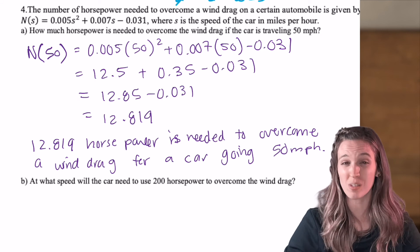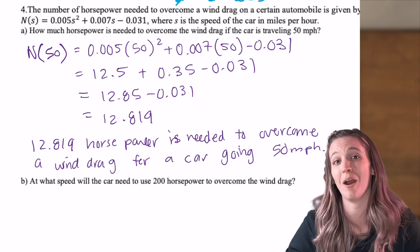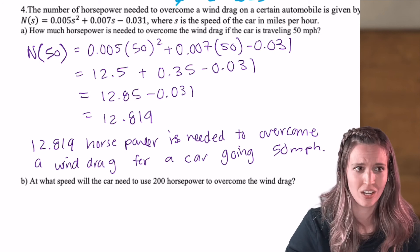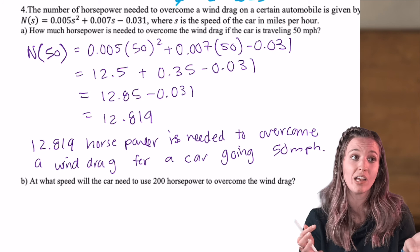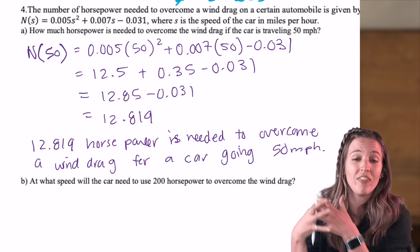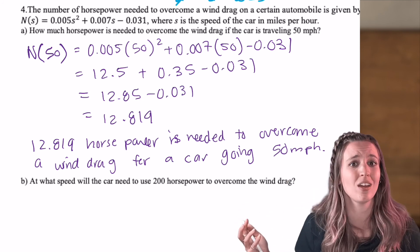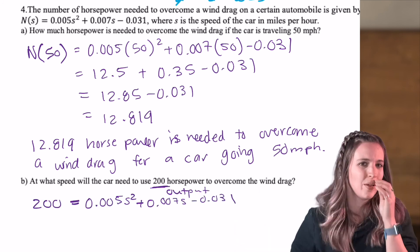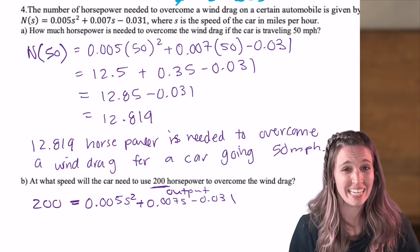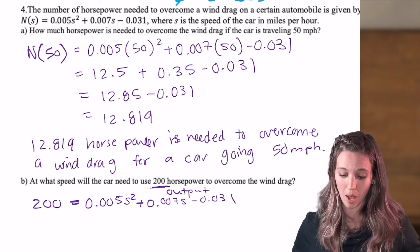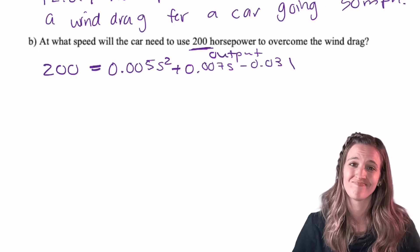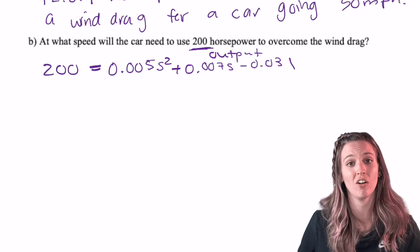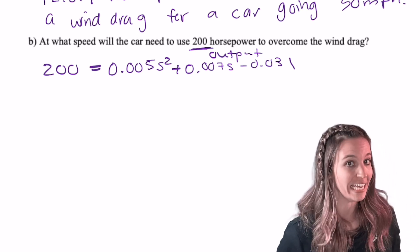The next one asks us at what speed the car will need to use 200 horsepower to overcome the wind drag. Wait a minute. 200 horsepower. Horsepower is my output. So now I have this quadratic with an input of speed and I want the output to be 200. So let's set our quadratic equation equal to 200 because that's our output. They're asking for what speed. So that means I want to know what s is. So how am I going to solve this quadratic equation? Well, I got to set it equal to zero and then I can try to factor or use the quadratic formula to solve. So give it a go. See if you can figure out what speed I need.